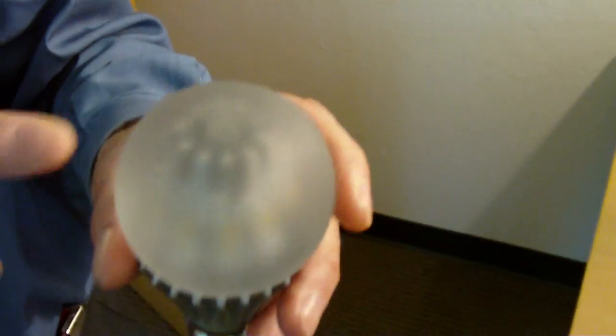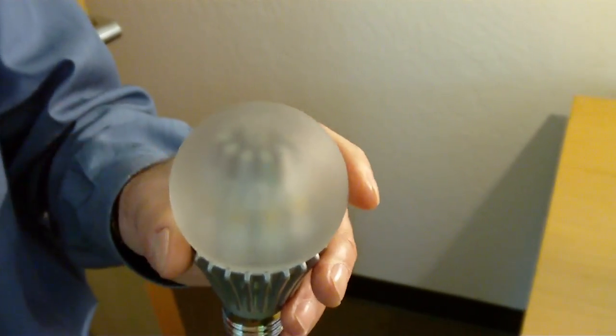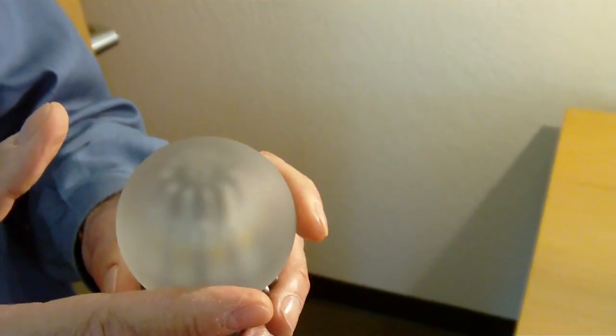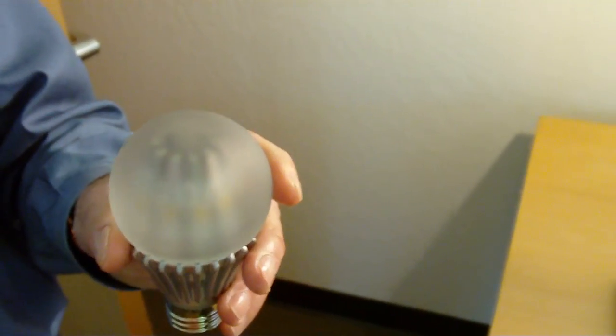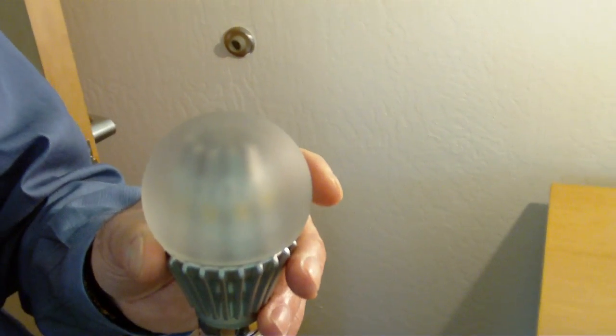And the liquid actually circulates within the light bulb automatically as it heats up and takes heat away from the LEDs, brings it to the surface of the glass, releases its heat to the surface of glass, and cools the LEDs.